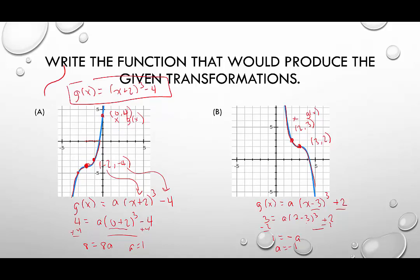So as I suspected, a is negative. So I can write this equation. We're going to say g of x equals negative x minus 3 cubed plus 2. And this negative will ensure that the graph flips over some horizontal line.